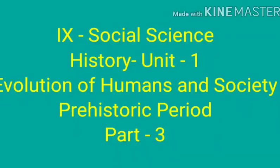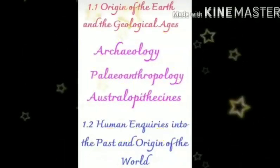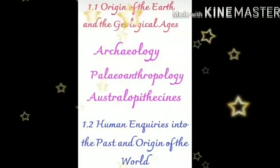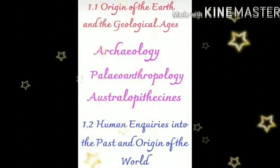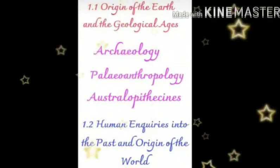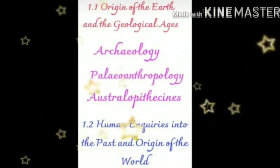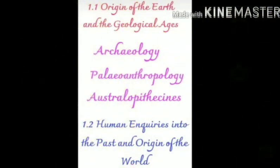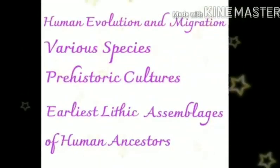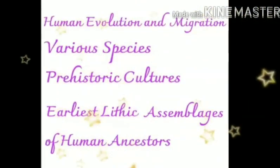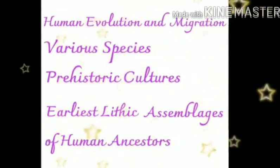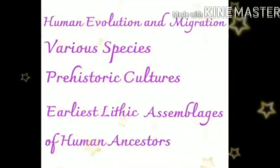Hi students, welcome to 9th Social Science, Unit 1. Today we are going to see about Evolution of Humans and Society: Prehistoric Period, Part 3. Already we have seen in previous videos about Origin of the Earth and the Geological Ages, Archaeology, Paleoanthropology, Human Evolution and Migration, Various Species, Prehistoric Culture and Earliest Lithic Assemblages of Human Ancestors.